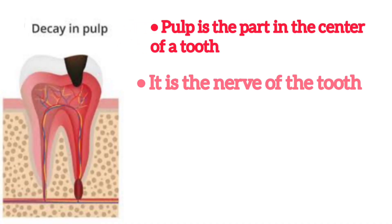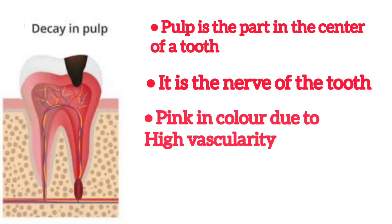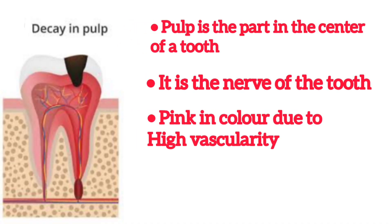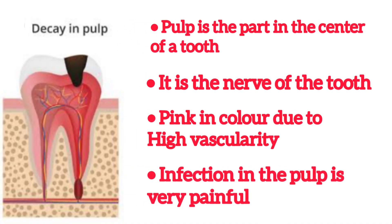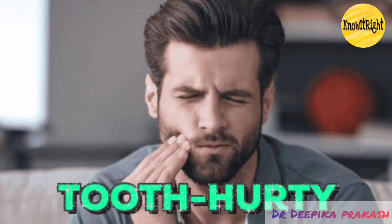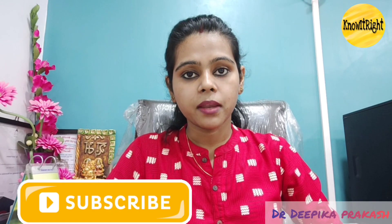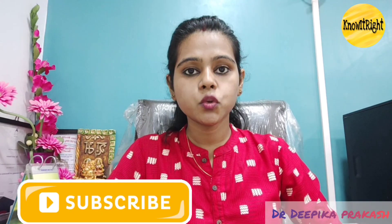The third layer deep inside the tooth is the pulp — that is the nerve of the tooth — which is pink in color and extends from the crown till the tip of the root. When the infection reaches the pulp inside, you start feeling pain, and in this situation a root canal treatment is required.